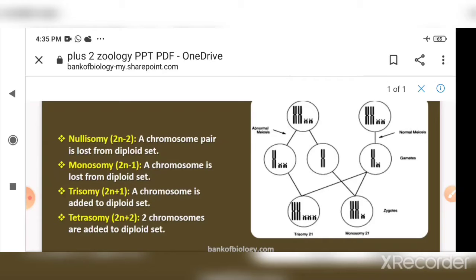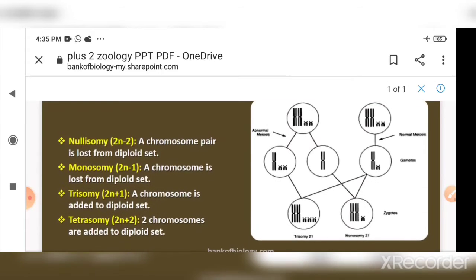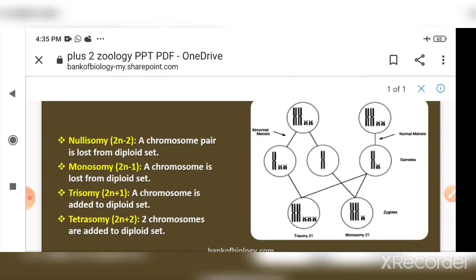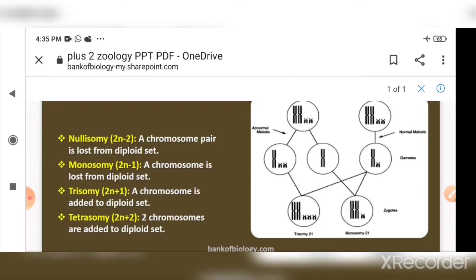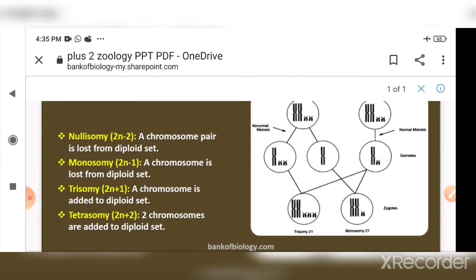In trisomy, one extra chromosome is added to a pair in the diploid set — so instead of two, there are three chromosomes at that position. When a chromosome is added to the diploid set, we call it trisomy.